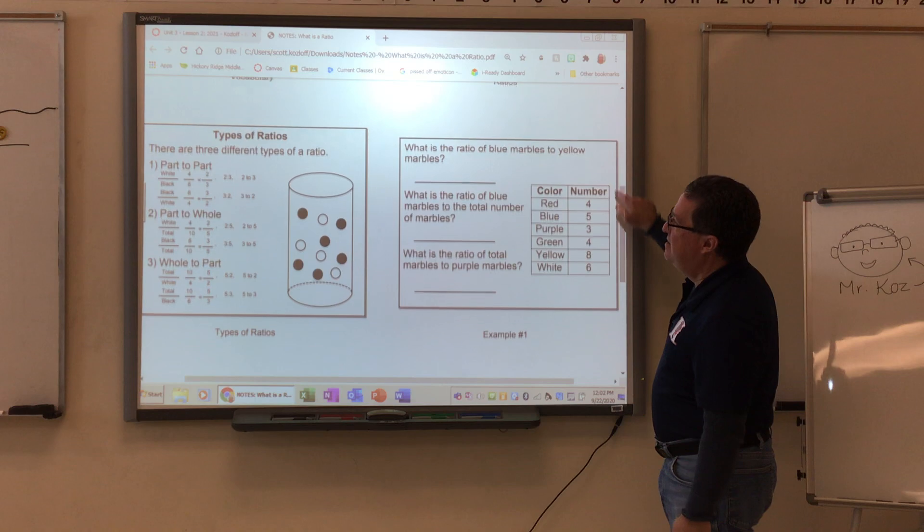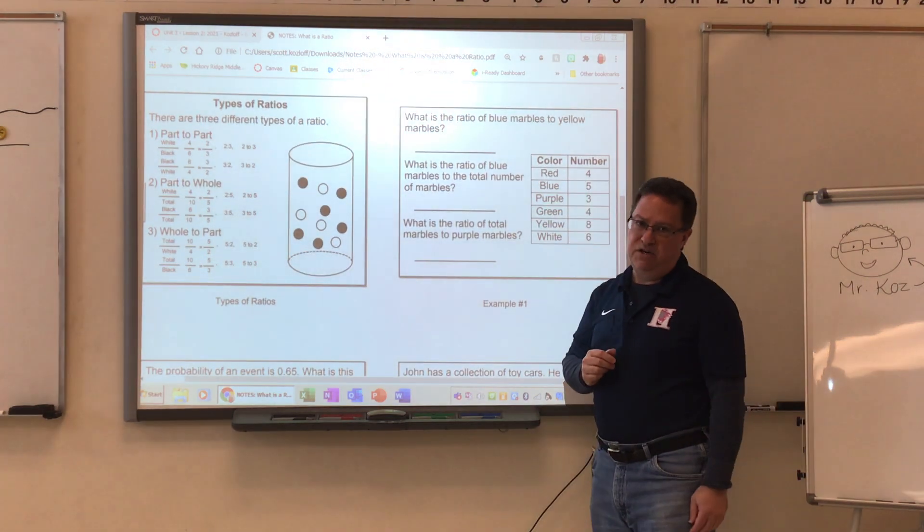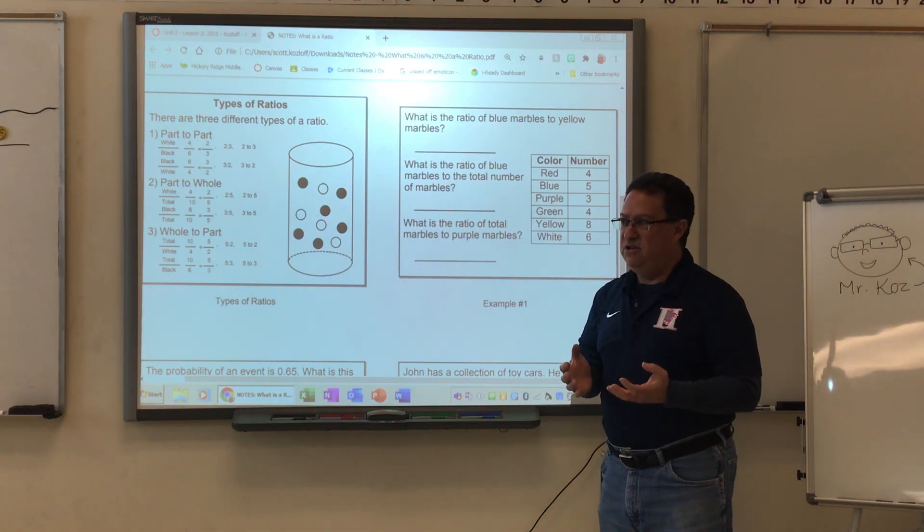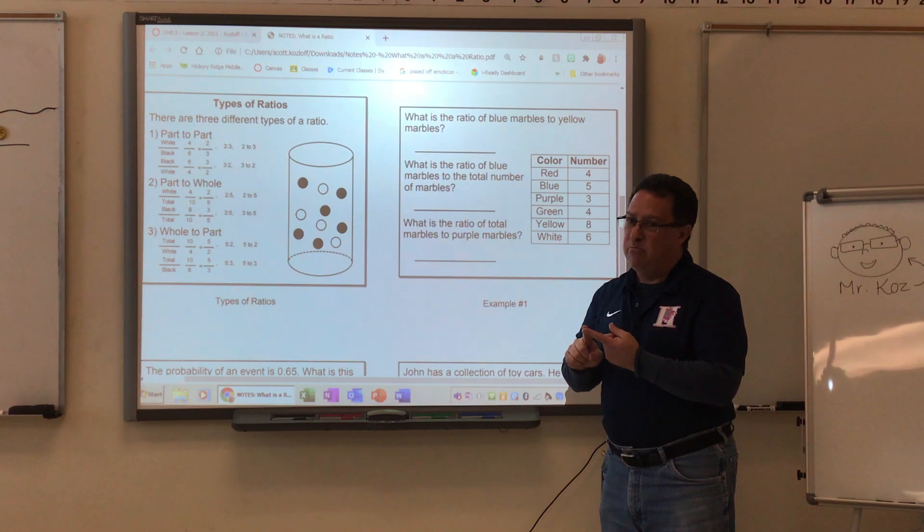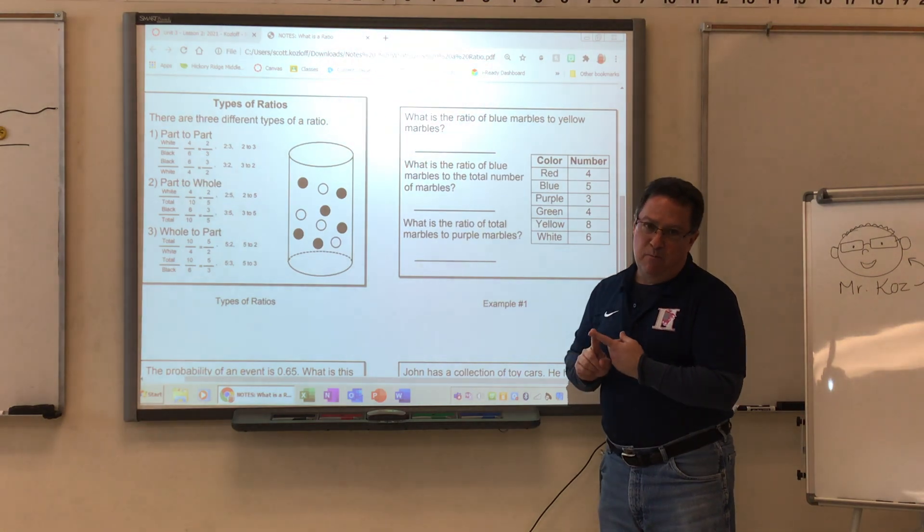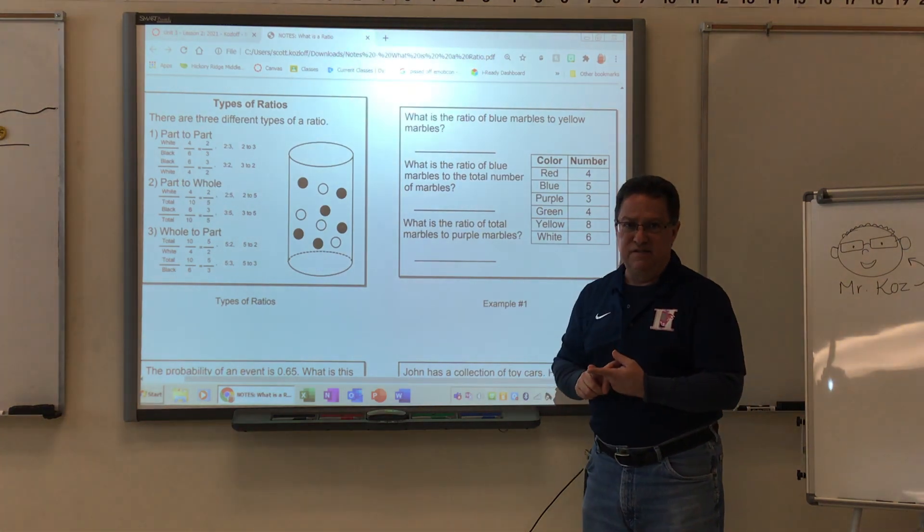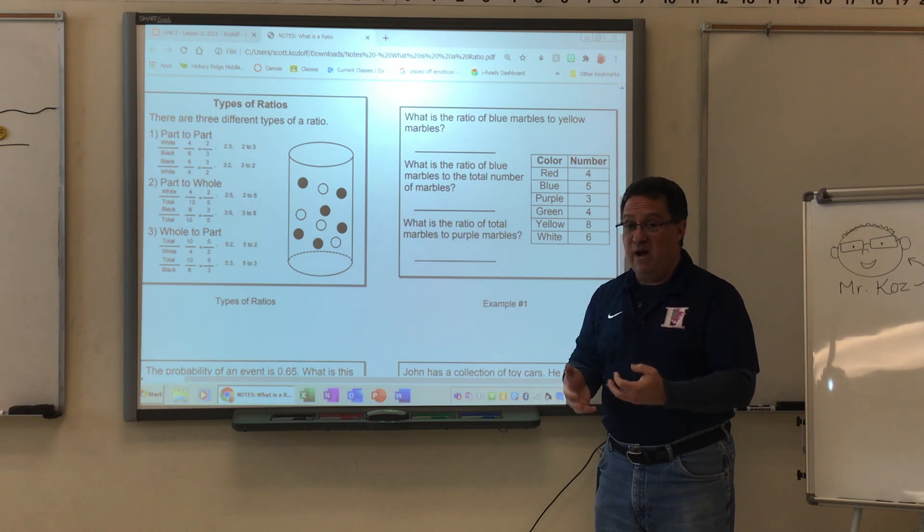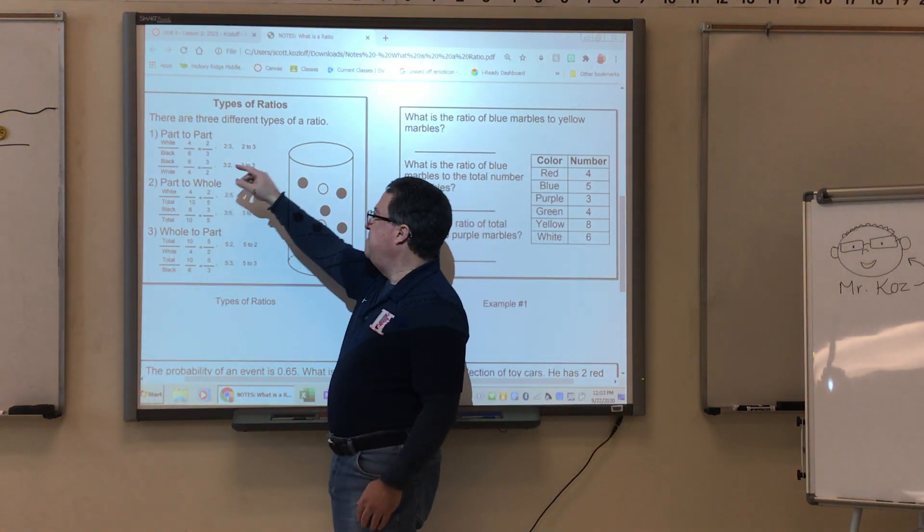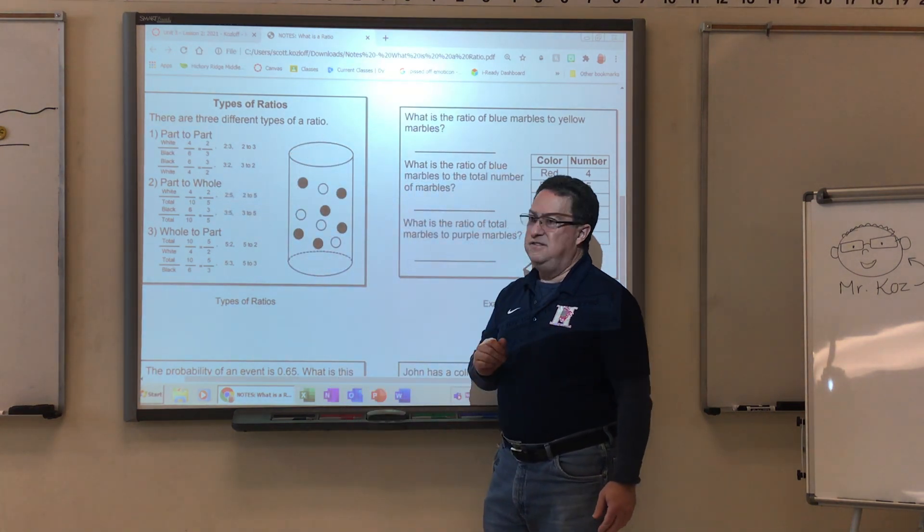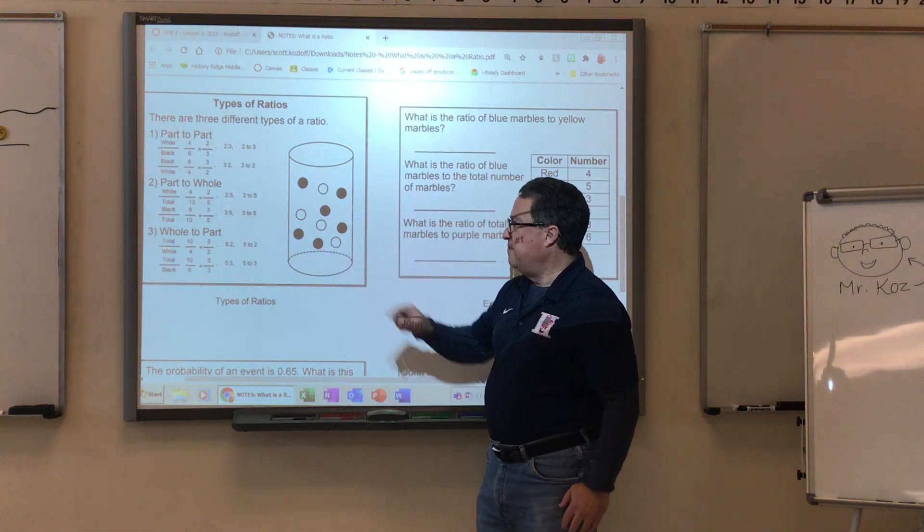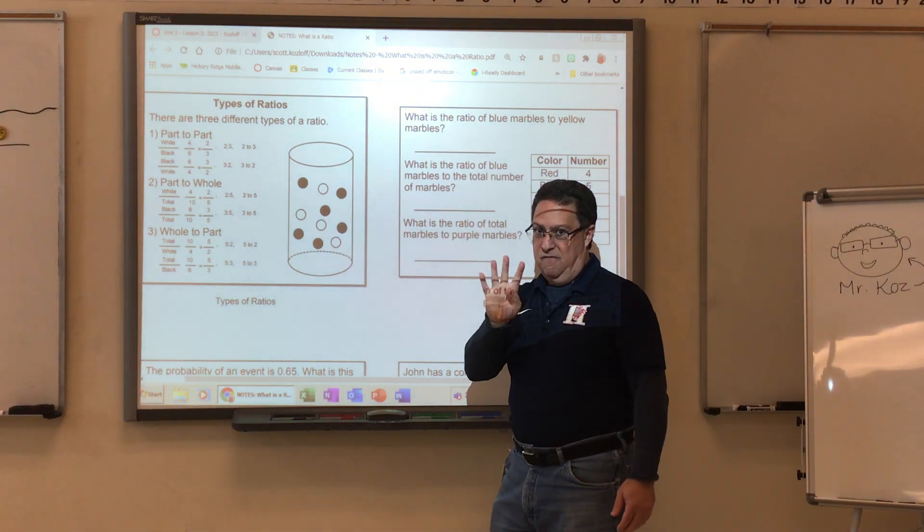All right, so next, let's talk about the three types of ratios. This is going to sound a little different, but you need to pay attention. Three types of ratios are part to part, part to whole, and whole to part. And the most important thing to remember about ratios is the way that you say it is the way that you write it. So in other words, if we say that this is a container that has black and white marbles in it, you can count the black marbles. There are six of them. You can count the white marbles. There are four of them.